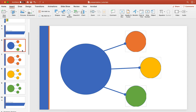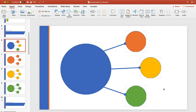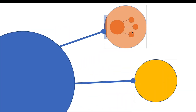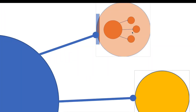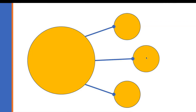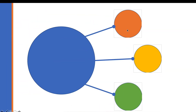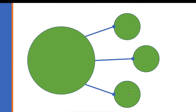Looking at slide six, which is a Slide Zoom example: if I click on the orange box we go to the next section, click back and it returns. Clicking the yellow box shows its subsections; click back and it returns to the menu. Clicking the green one shows those subsections and goes back too.